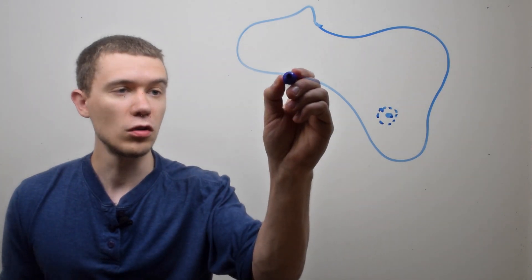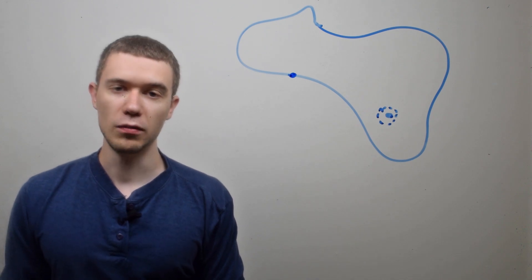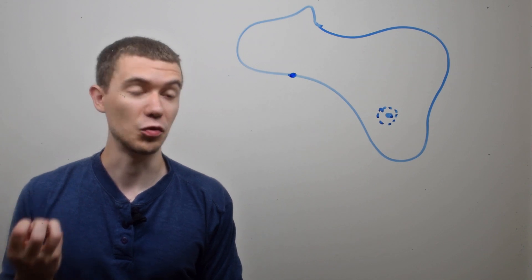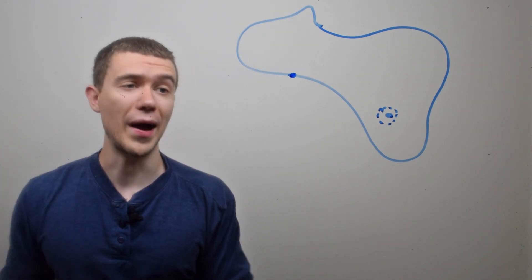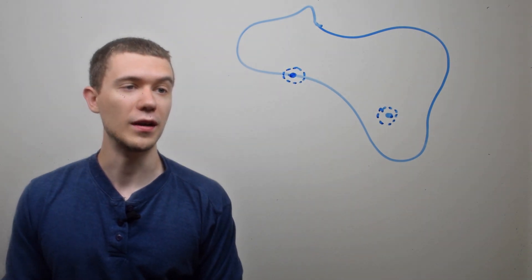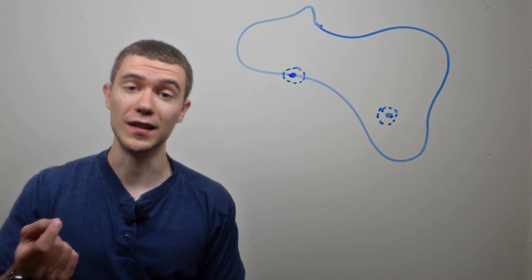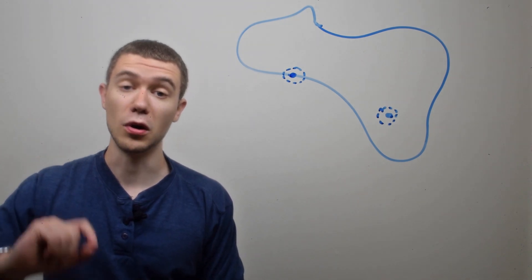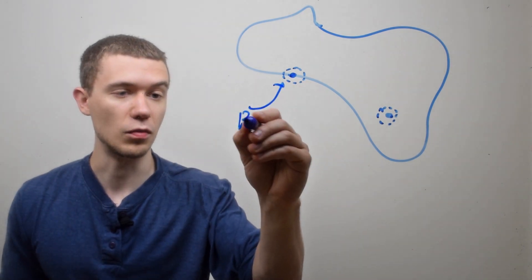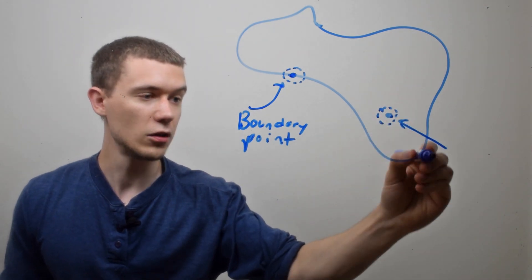But if I draw a point here on this boundary, can we draw a neighborhood around this point that's completely inside of this region? Well no, every neighborhood would have some part inside our set and some part outside of our set. So this is called a boundary point. And this would be an interior point.